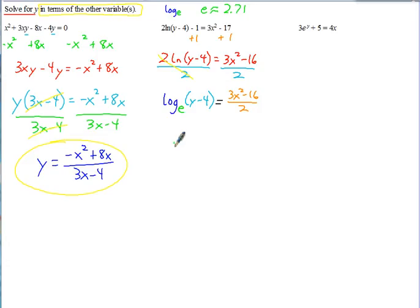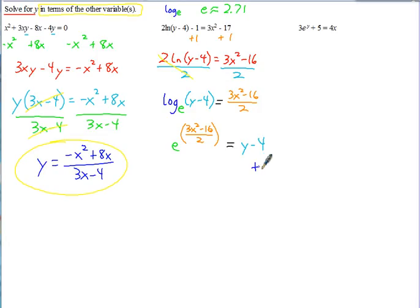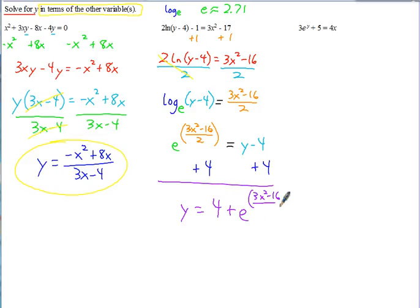Remember, logarithms are equal to exponents. So the right-hand side, 3x squared minus 16 all over 2, becomes our exponent. So e raised to the 3x squared minus 16 over 2 equals what's inside the log — the y minus 4. That's how you get that y out of the logarithm. The last step: add 4 to both sides. So y equals 4 plus e to the 3x squared minus 16 over 2. Now we've solved for y in terms of x.